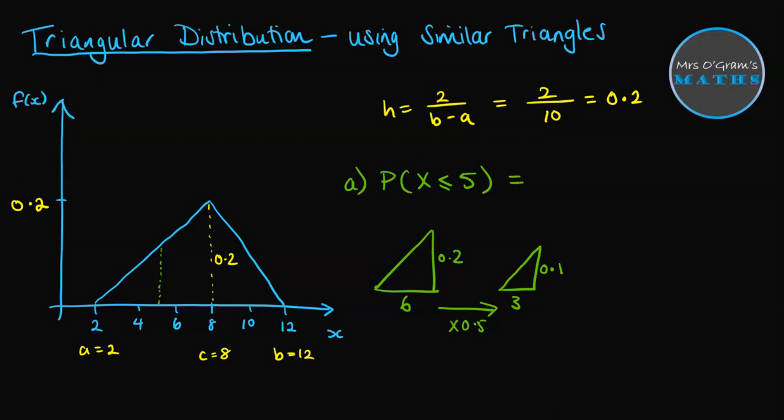From there, we can work out the probability as being the area of this triangle. It's a half times 3 times 0.1, which comes to 0.15.